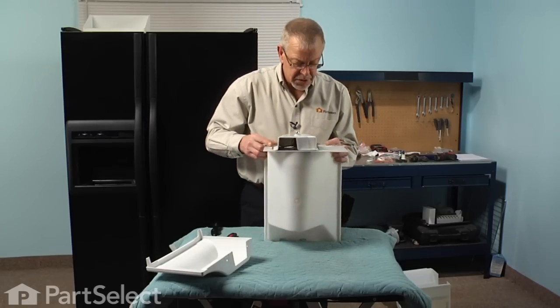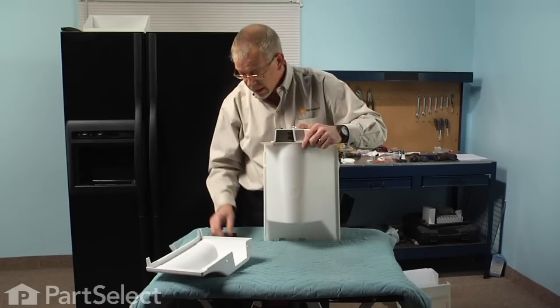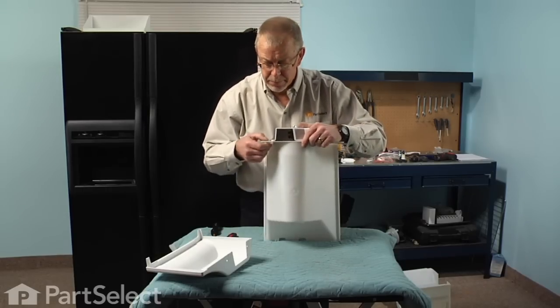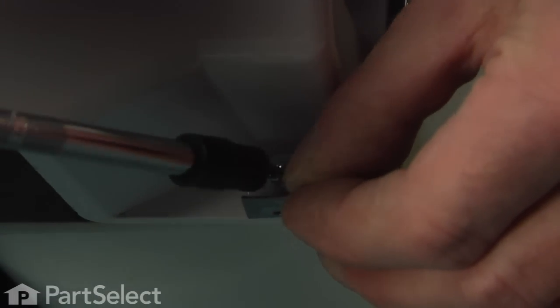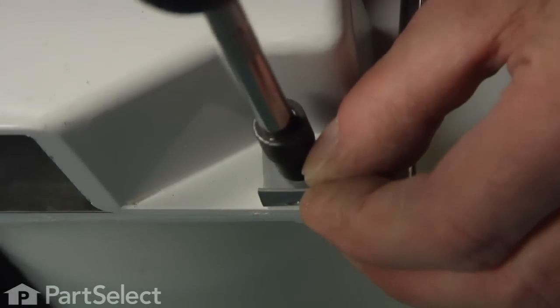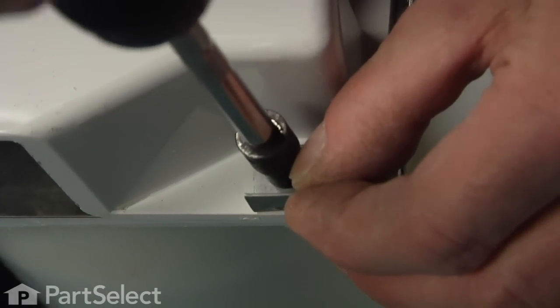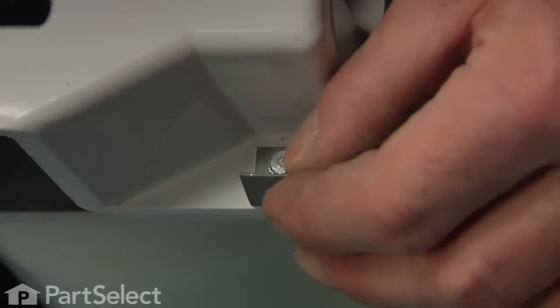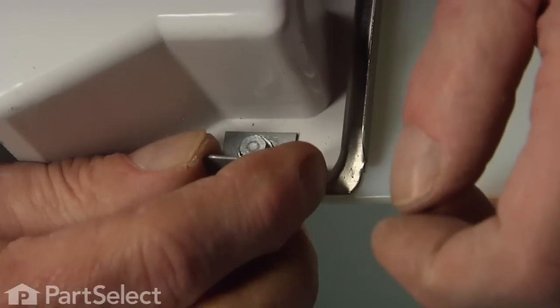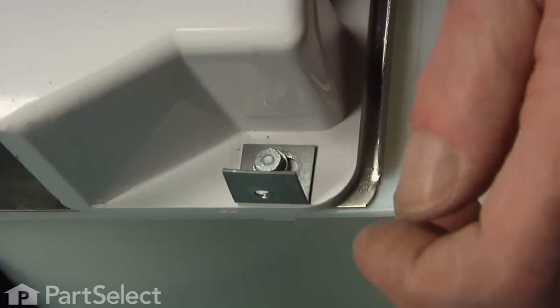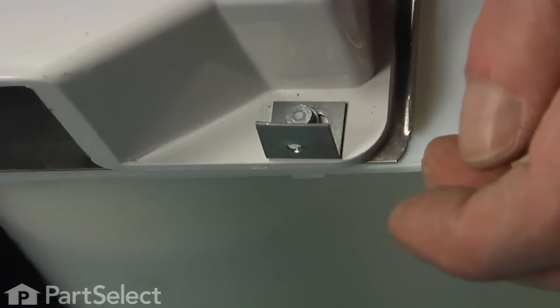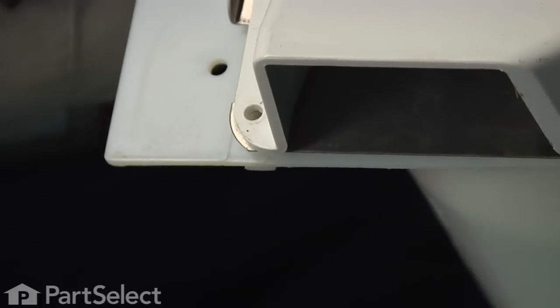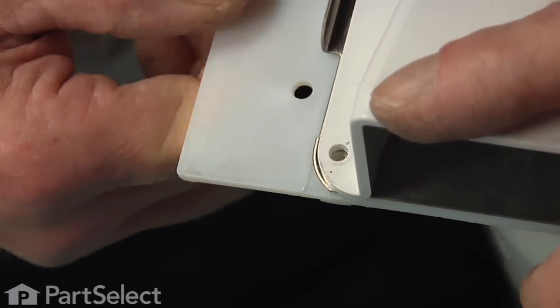Holding that in place, we'll stand it on end, and we're ready to reinstall the little angle brackets. We'll insert the screw in the pre-drilled hole in the bin. We won't tighten that screw completely yet until we line up the L-bracket, and do the same thing with the opposite side.